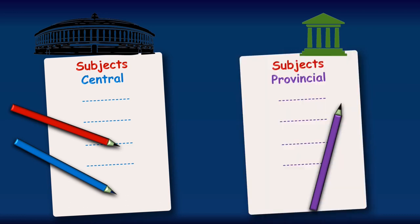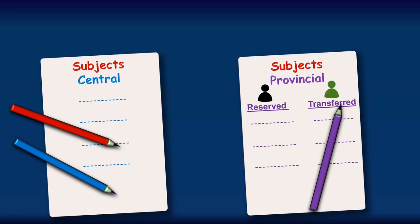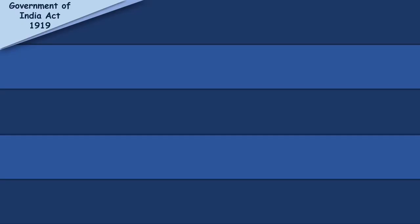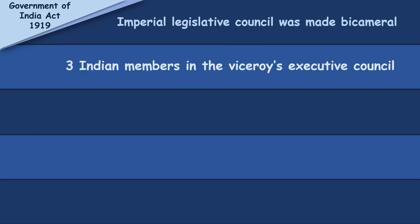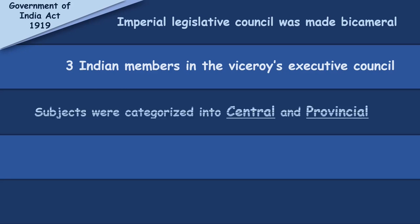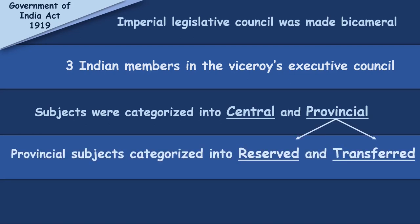Provincial subjects were further categorized into two lists: reserved and transferred. Subjects on the reserved list were under the control of the Governor, while subjects on the transferred list were handed over to Indians, showing a hierarchy at the provincial level. To summarize the Act of 1919: the Imperial Legislative Council was made bicameral; three Indian members were added to the Viceroy's Executive Council; subjects were divided into Central and Provincial; and Provincial subjects were further divided into reserved and transferred.